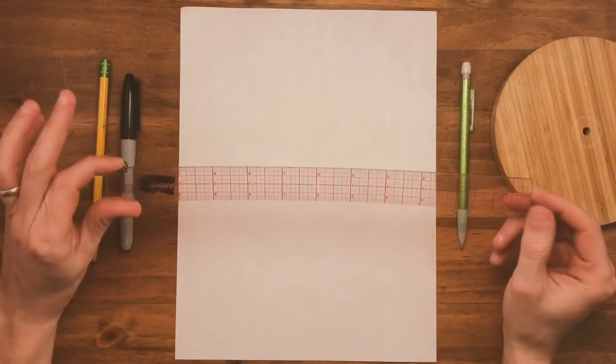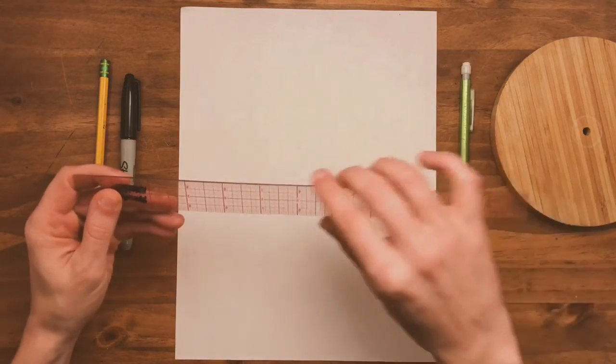And some kind of a straight edge. So a ruler or the edge of a book or the edge of a piece of paper. Something to make straight lines.